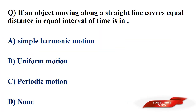If an object moving along a straight line covers equal distance in equal interval of time, it is in? Options: simple harmonic motion, uniform motion, periodic motion, none of those. Answer: option B, uniform motion. An object covering equal distance in equal time intervals is in uniform motion.